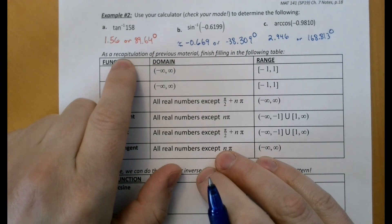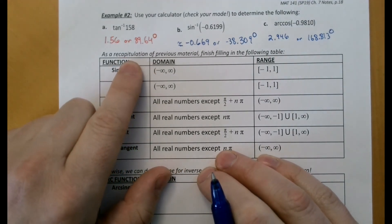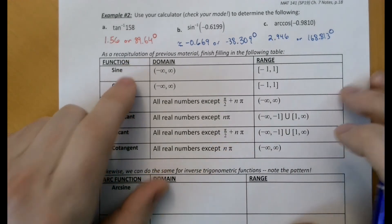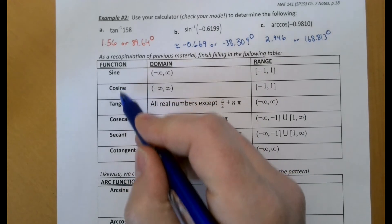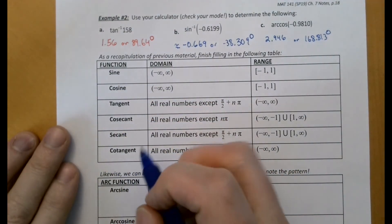So this is a nice, did you know that recapitulation is the full word of recap? Yeah, you did because that's in the notes. So here's a recap of the domain and range of the sine, cosine, tangent, cosecant, secant, and cotangent functions.